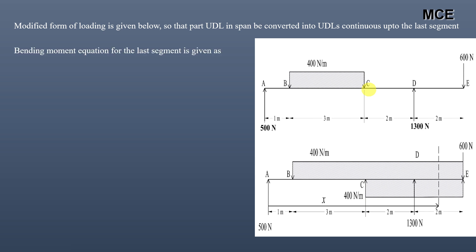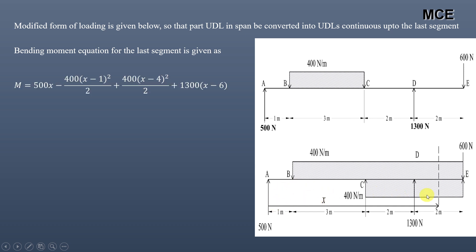The bending moment equation is written for the last segment, where x is measured from support A. The bending moment at a section at distance x from A, taking clockwise moments as positive, is: M = 500x − 400(x−1)²/2 + 400(x−4)²/2. The moment of the downward UDL about the section is 400(x−1) × (x−1)/2 = 400(x−1)²/2. The distance from the end of the original UDL to x is x − 4, since 3 + 1 = 4.